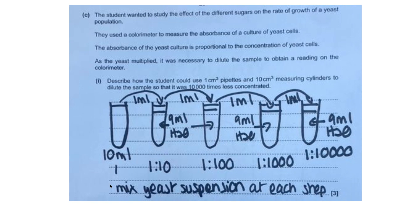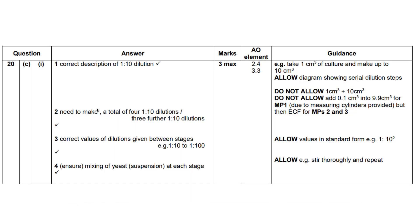It's really important that I'm saying mix the yeast suspension thoroughly at each step. I know this is a yeast suspension because it tells me in the question. So I'm linking what I know I get a mark for into the question — always write that step even if you're unsure of the actual correct dilution. And as you can see, I would get full marks from that diagram, from these different marking points given in the mark scheme.